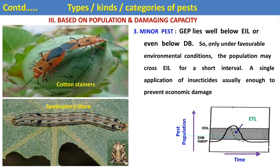Minor pests cause about 5 to 10% yield losses. The General Equilibrium Position lies well below the EIL, or even below the damage boundary. Only under favorable environmental conditions may the population cross the EIL for a short interval. A single application of insecticide is usually enough to prevent economic damage. Examples are cotton stainer (red cotton bug) and Spodoptera litura (tobacco leaf caterpillar).